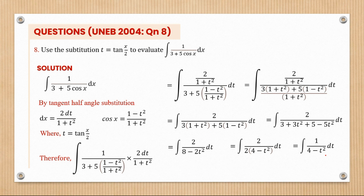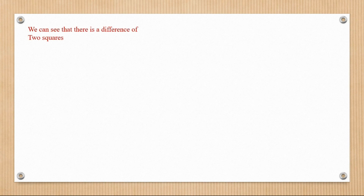This step is unique because we can see there is a difference of two squares in the denominator. So 1/(4 - t²) is the same as 1/((2 - t)(2 + t)). These are clearly linear factors, so we're going to express this as partial fractions.